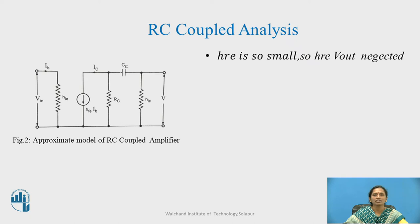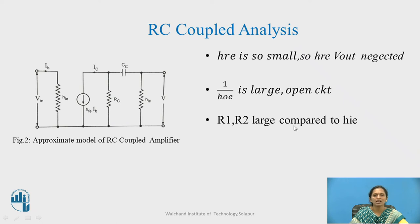We can say as HRE of the transistor is small therefore, HRE into Vout is neglected which is at the input side of the transistor. And 1 by HO is very large which is parallel to this particular output part of the transistor which is also neglected. The circuit becomes simply with this particular arrangement. And R1 and R2 which are used for the biasing purpose which are large as compared to HI, since we have just this particular representation.